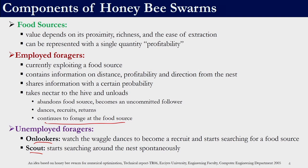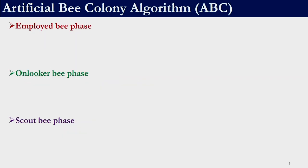There are two types of unemployed foragers: onlookers and scouts. Onlookers watch the waggle dance and may choose to follow a particular bee to search for a food source. Scouts do not necessarily watch the waggle dance but start exploring around the nest spontaneously. So we have three components: food source, employed foragers, and unemployed foragers. The Artificial Bee Colony algorithm consists of three phases: the employed bee phase, the onlooker bee phase, and the scout bee phase.